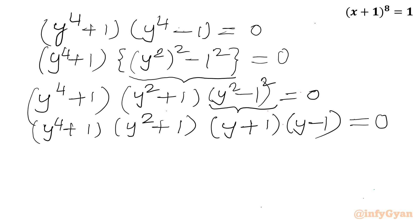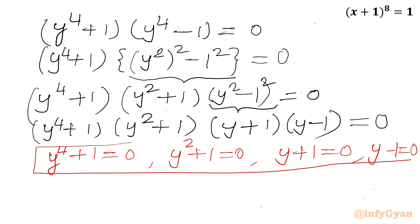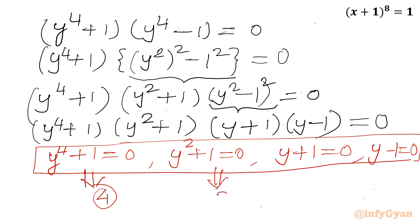From this factored form we get four equations: y^4 + 1 = 0, y² + 1 = 0, y + 1 = 0, or y - 1 = 0. The first gives 4 solutions, the second gives 2 solutions, and the last two give one solution each — overall 4 + 2 + 1 + 1 = 8 solutions.